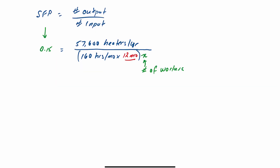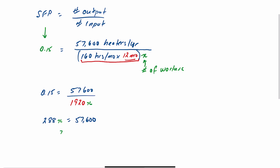Working this through: 0.15 is equal to 57,600 divided by — when you take 160 hours times 12, that's 1,920 — multiplied by x. So doing our basic cross multiplication, we have 288x equal to 57,600. Therefore x equals 57,600 divided by 288, which is 200 workers.